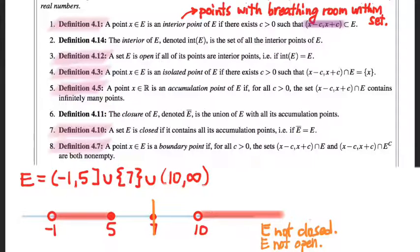What's a value of C that I could choose to show that this is in fact an isolated point? Anything less than two. So let's choose one. So again, all these definitions have open intervals as part of their DNA.